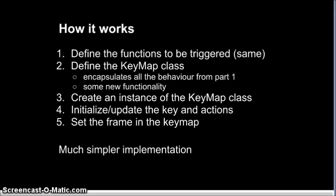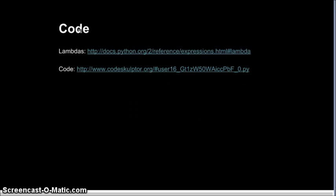So here's how it works: like in Part 1, we will start with game-specific functions such as thrust and turn left. Next, we define a key map class, which will encapsulate the behavior of Part 1 and add some new functionality as well. Then we'll create a global instance of key map, and initialize and update the key map object. Finally, we connect the key map to the frame. This is a much simpler implementation than we saw before. So let's look at some code.